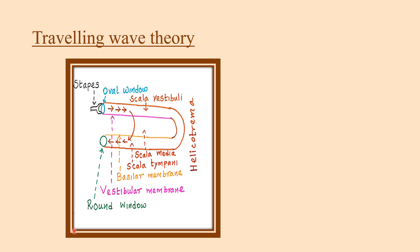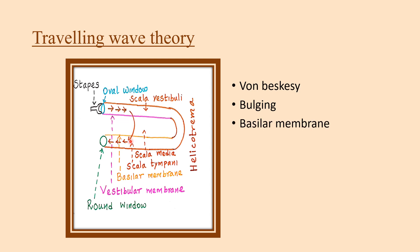The Traveling Wave Theory is also a mostly accepted theory, explained by von Bekesy. When sound waves are transmitted from the middle ear, the stapes strikes on the oval window. The sound is transmitted through the scala vestibuli, and the waves hit the vestibular membrane, producing a bulging in the basilar membrane, initiating a wave form — the traveling wave.